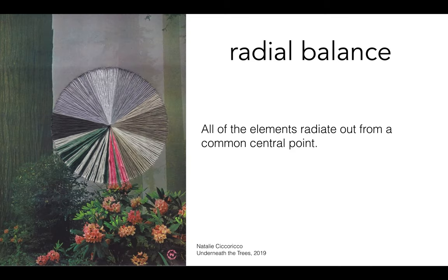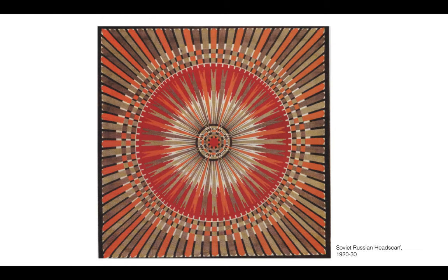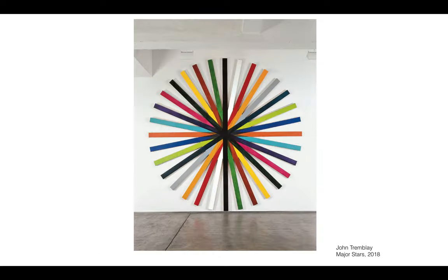Radial balance is where all the elements radiate from a common central point. Here you can see a focal point is established once you lead your eye in to where all the lines are connecting. Radial balance can be very static. This would be a good example of a very symmetrical radial balance. Your radial balance does not need to be right in the center all the time — you might find it occurring in different areas within your composition. Here's another example of symmetrical radial balance.